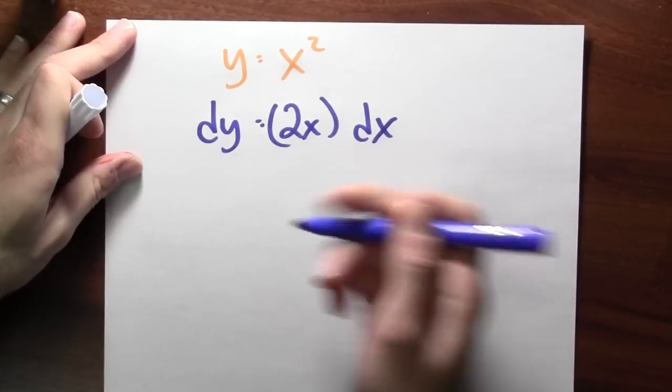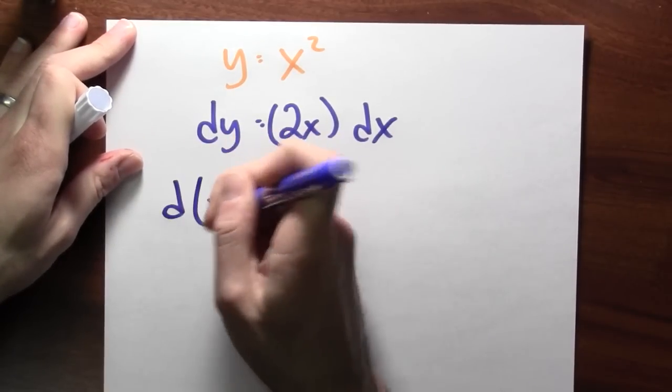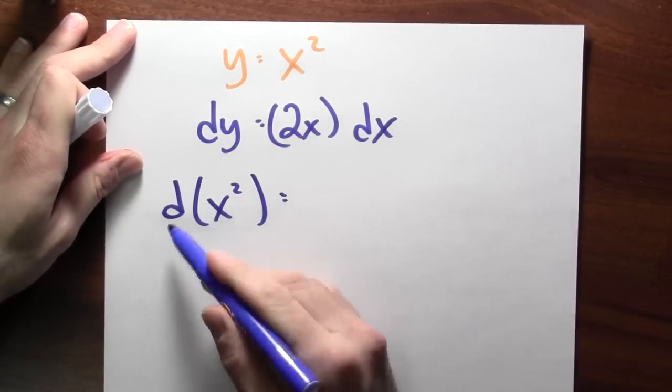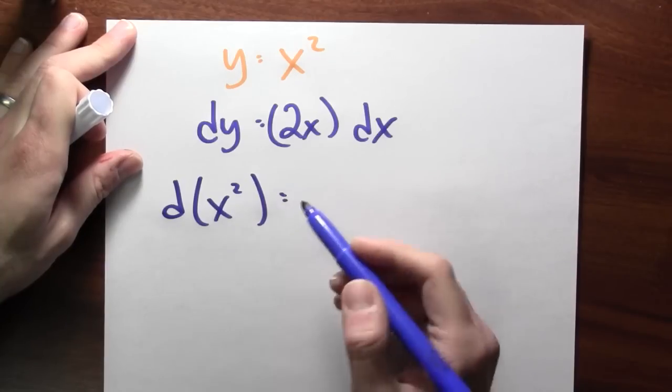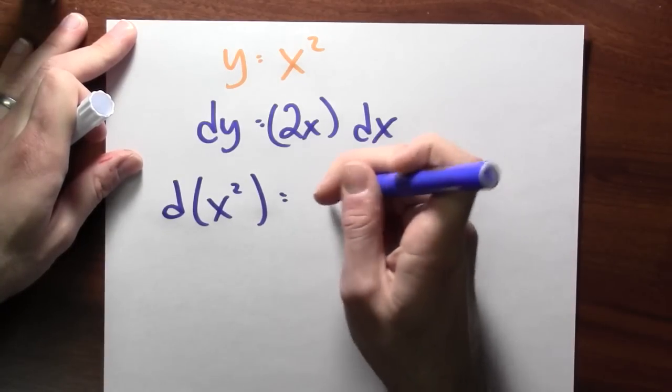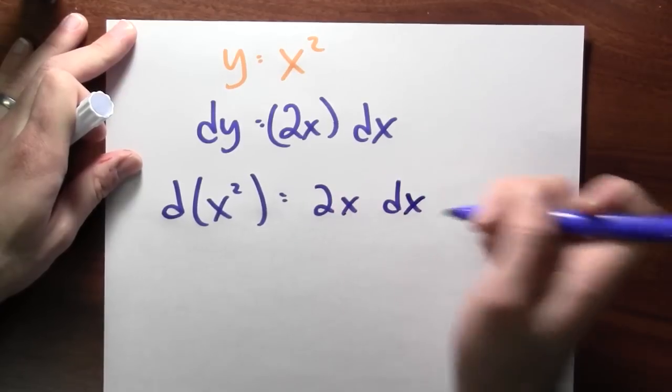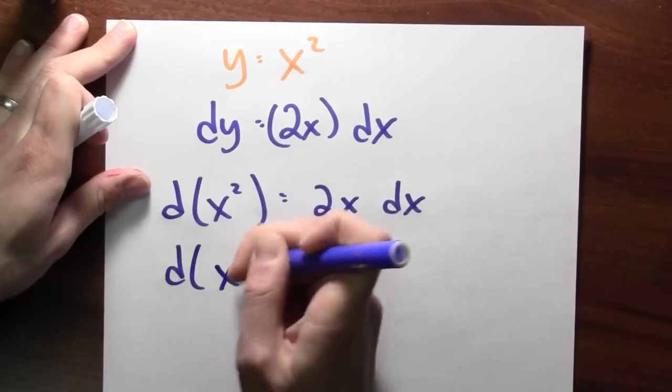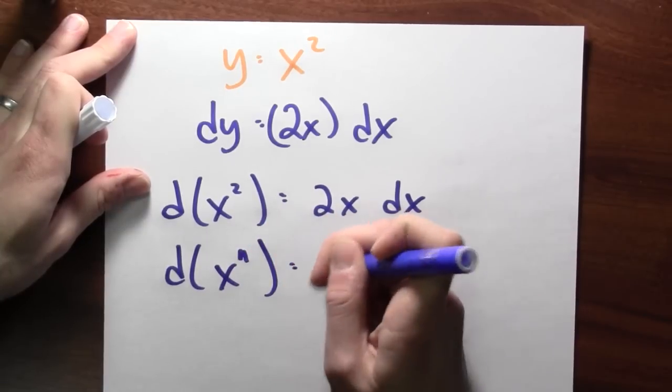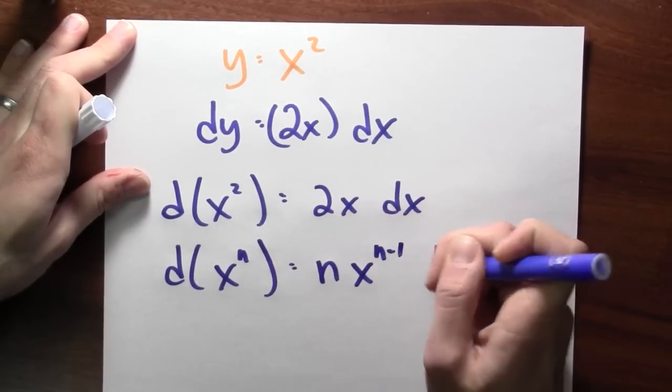But you don't even necessarily need to write it this way. You could, if you wanted to, write d of x squared and then think that there's a power rule for differentials just like the usual power rule, which then says that this is 2x dx. Or in general, d of x to the n will be n x to the n minus 1 dx.